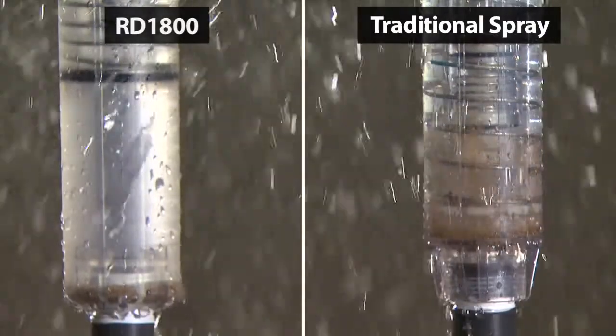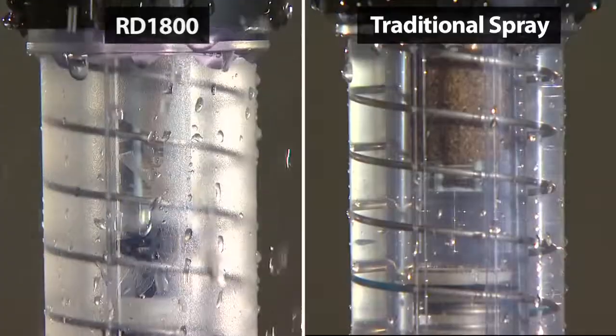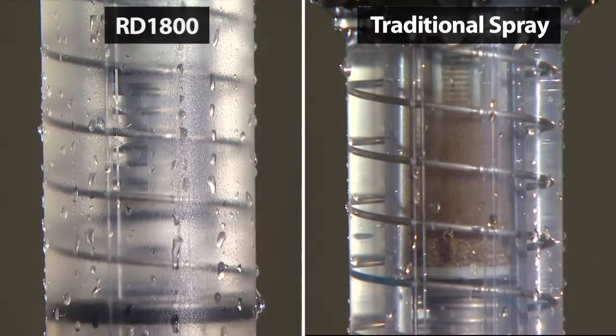With each system startup, the RD1800's unique debris pockets hold grit in place, removing it from circulation and preventing long-term damage caused by frequent sandblasts.